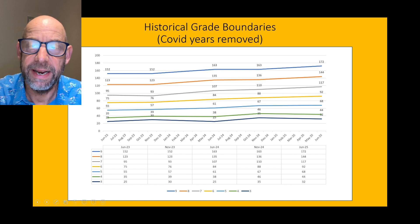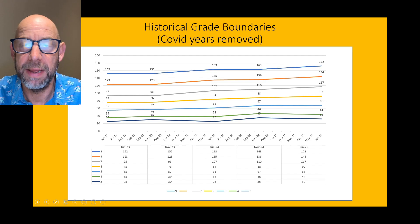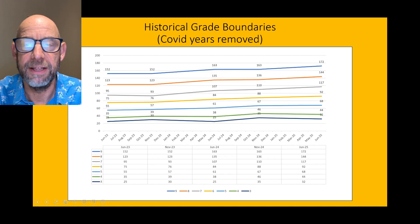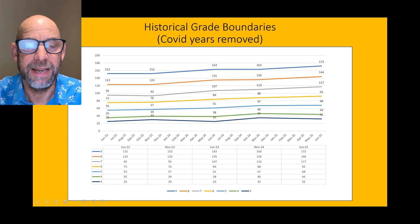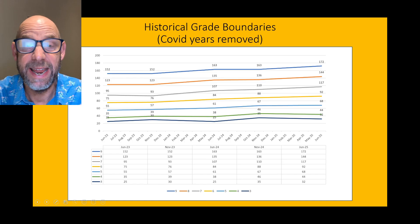For a grade 6, that line seems to be flattening a bit, so perhaps it'll flatten around 92-93. And to get a grade 5 — that blue line — let's say we stay on 68. That looks about right.